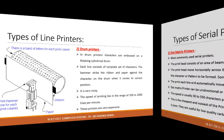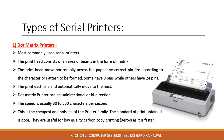Serial printers are also divided into two categories: dot matrix printers and daisy wheel printers. The dot matrix printers are the most commonly used serial printers. As the name suggests, characters are formed by a matrix of dots. The print head consists of an array of pins in the form of a matrix, and the print head moves horizontally across the paper.